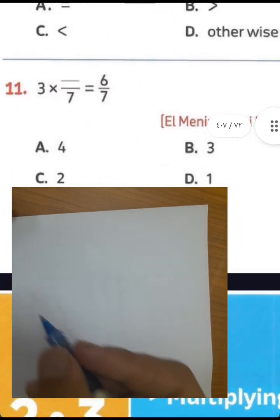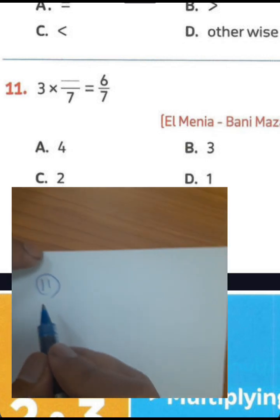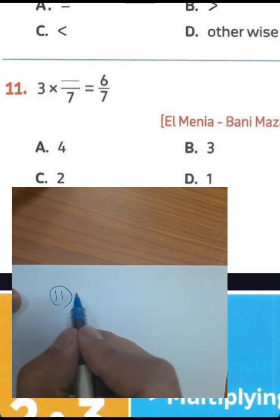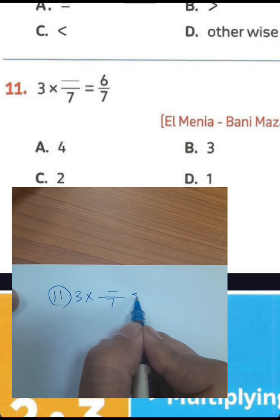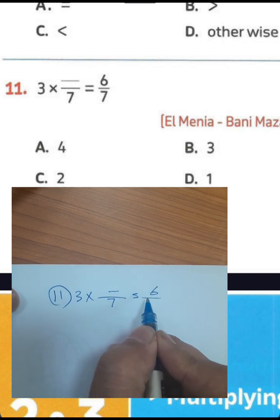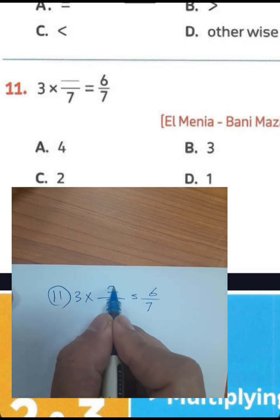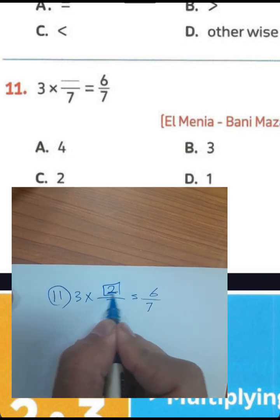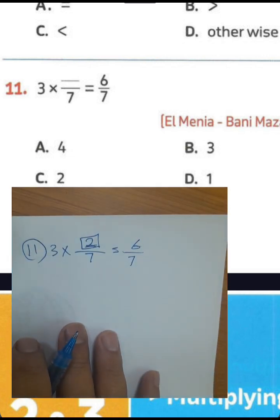Question number 11: 3 times something over 7 equals 6 over 7. We know 3 times 2 equals 6, so you must write 2 here in the space.